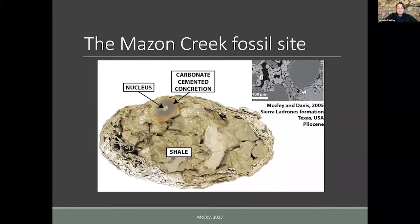The mineral cement holds the shale together, making a really solid object compared to the shale itself. Concretions are oval or locally deposited structures rather than a whole layer of carbonate because they form around a nucleus. Many different things can be a nucleus — for example, a little bit of carbonate shell could be a spot where carbonate crystal growth happens more easily, or something like a decaying organism.